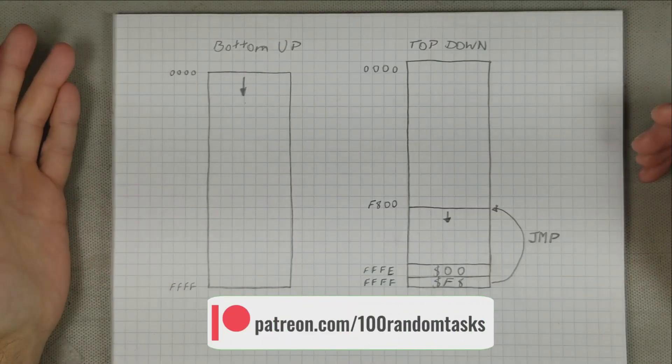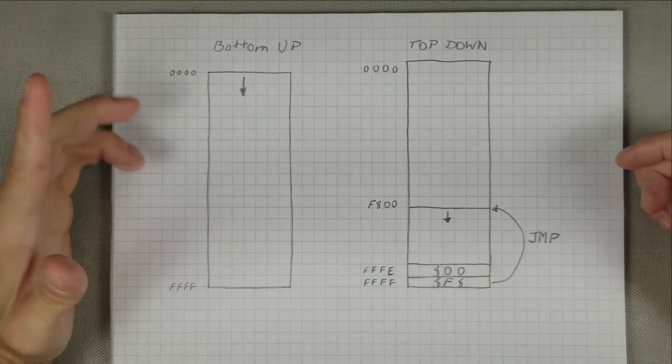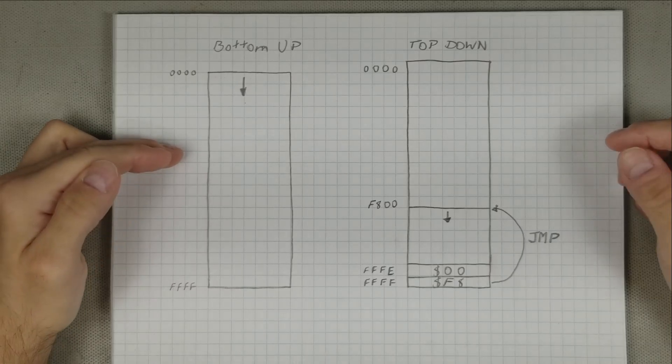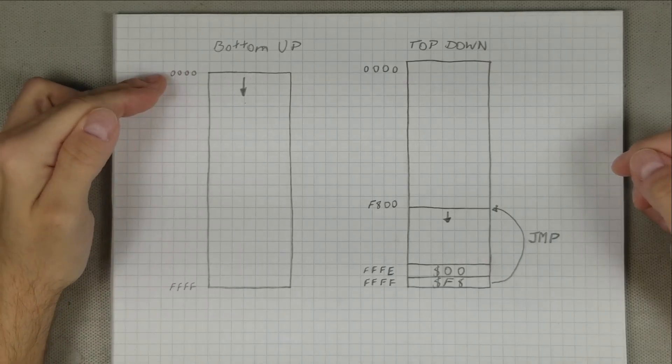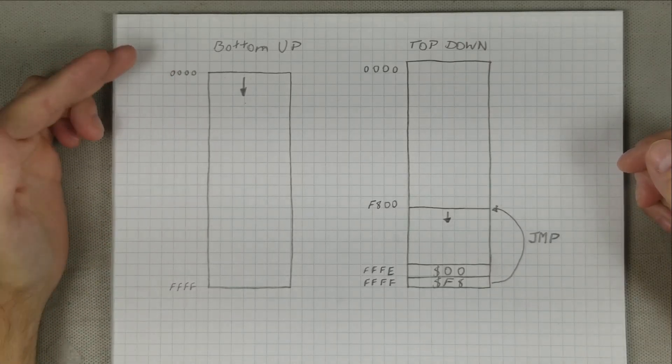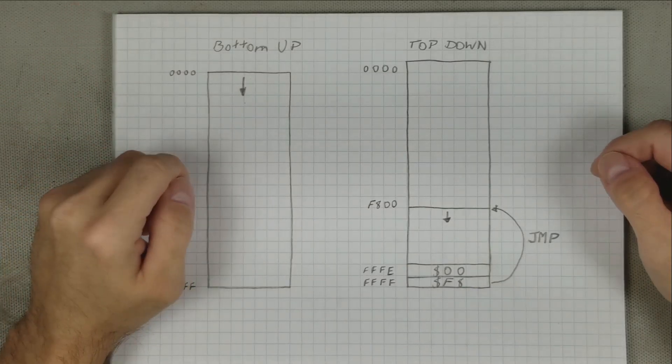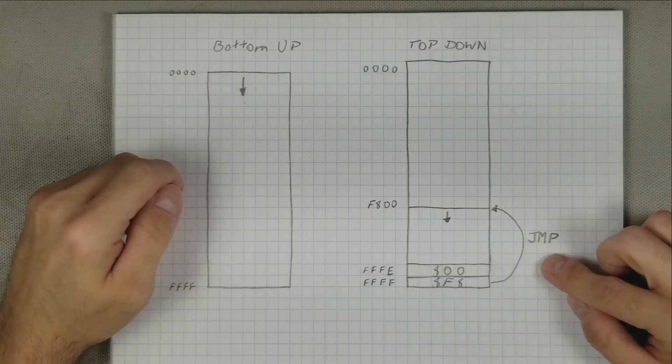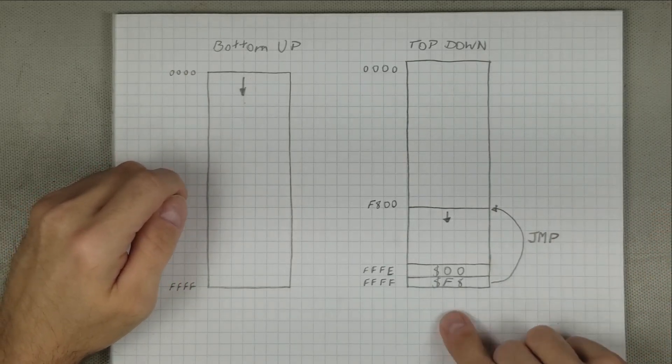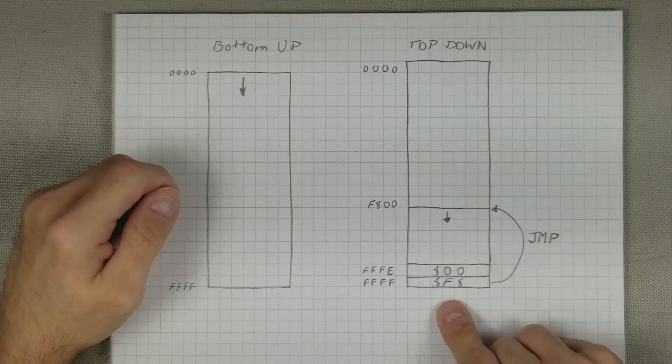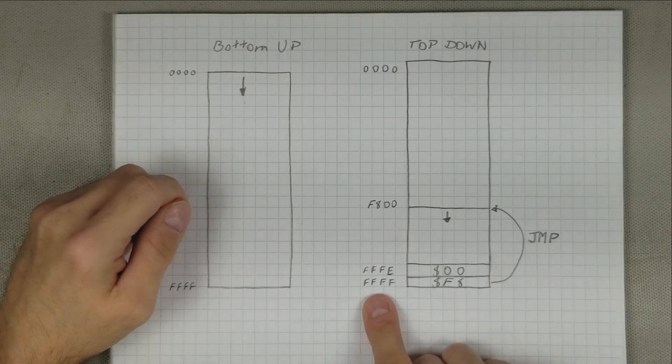So what's the difference between a bottom-up CPU and a top-down CPU? At reset, a bottom-up CPU starts executing code at address 0, or the bottom of the memory map, and increments from there. A top-down CPU, by comparison, at reset, immediately executes the jump instruction by loading the jump to address from the top of the memory map. In this case, from addresses FFFE and FFFF.